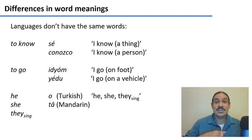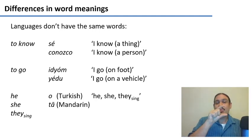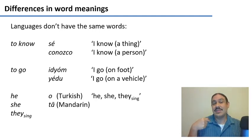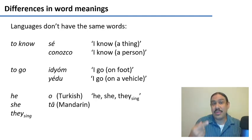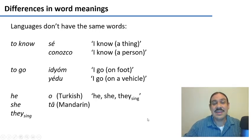For example, in English you have a word like 'to know' — I know linguistics and I know Joe. In Spanish, there are two different words for these concepts. I know a thing, like linguistics, and I know Juan, a person. So knowing a thing and knowing a person are different in Spanish, whereas you'd use the same word in English.